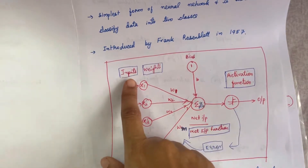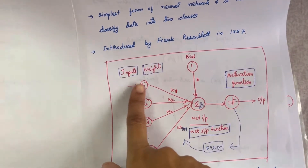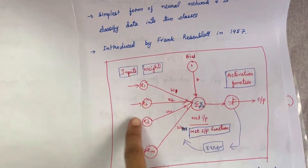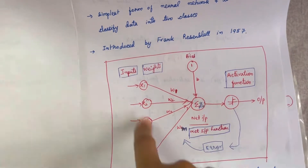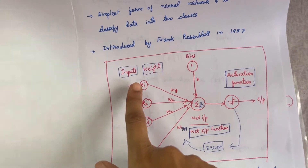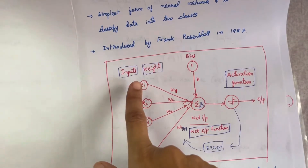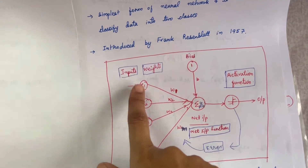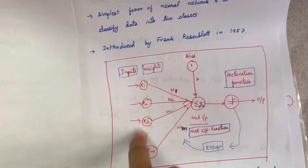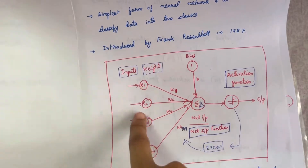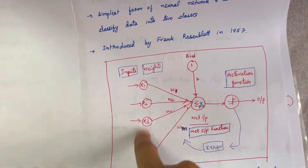First, coming to the inputs — inputs are nothing but the input values which are given to this perceptron neural network. Suppose in your application if you are having four inputs, then there will be only four nodes. Based on the inputs you have to give the nodes.